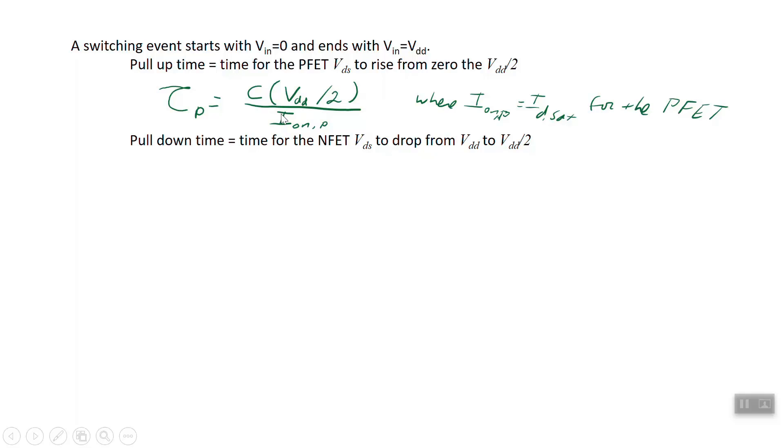These times are just that expression we just came up with. Instead of delta T, I'm going to write tau sub P, the pull-up time for the PFET. And it's still C. The voltage it's going to is half of V sub DD. The current we'll write as I on for P. What this I sub on really is, since the MOSFETs operate in saturation in a CMOS, they're either on full blast or they're off, we'll call it IDSAT for the PFET. The pull-down time for the NFET is the same expression, but we have to use I on for the NFET.